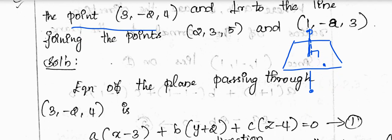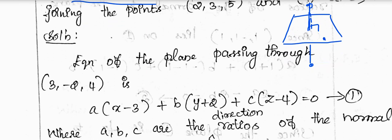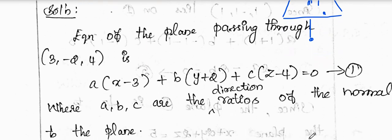The general equation of the plane is: a(x - x1) + b(y - y1) + c(z - z1) = 0, where (x1, y1, z1) is (3, -2, 4) and a, b, c are the direction ratios of the normal to the plane.